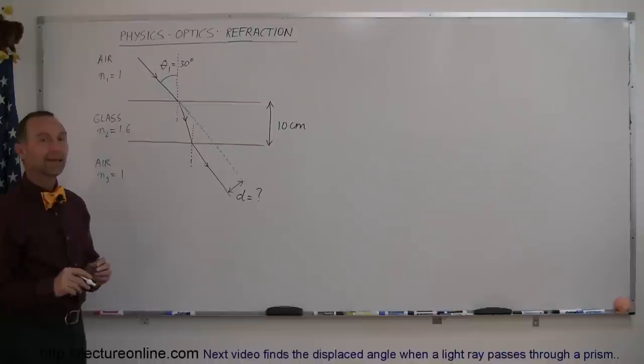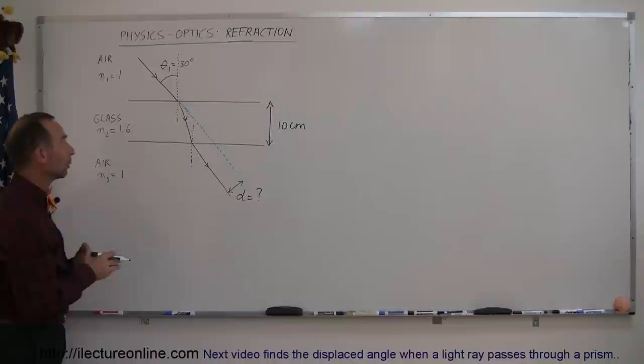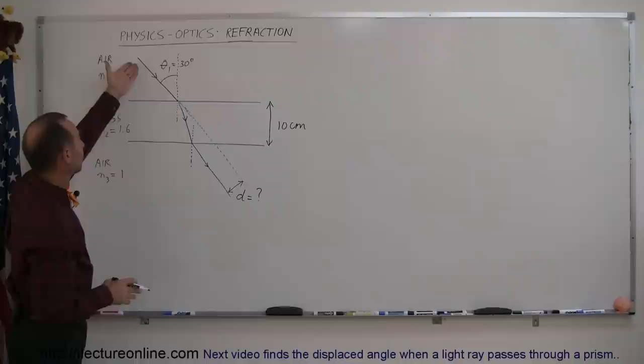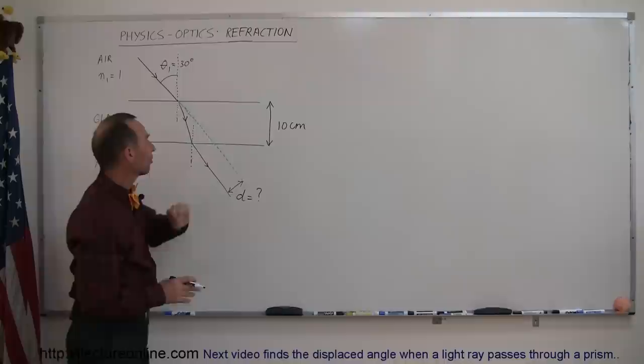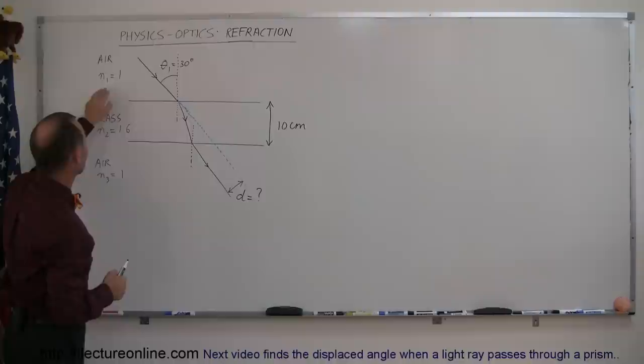Here's our next example of how we deal with refraction. This one is a little bit more complicated. We have a beam of light traveling through air coming to a boundary between air and glass. Here's a slab of glass that's 10 centimeters thick. As it enters the glass, glass has a different index of refraction equal to 1.6, as opposed to 1 for air.